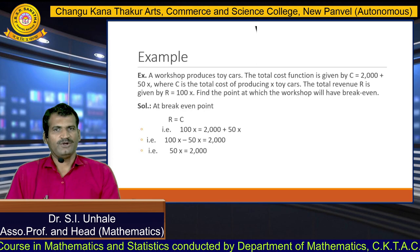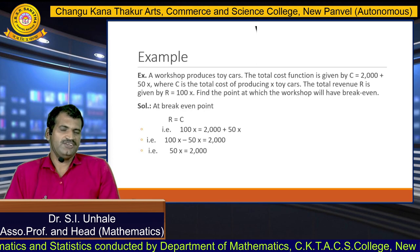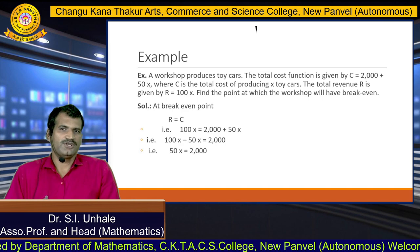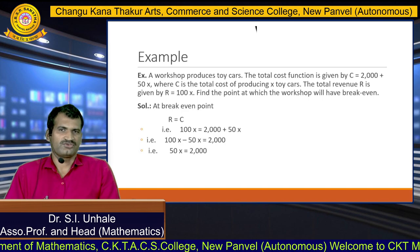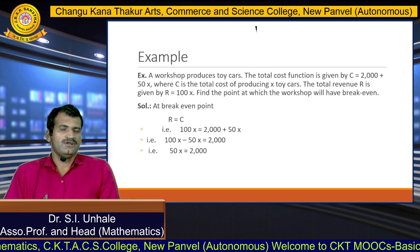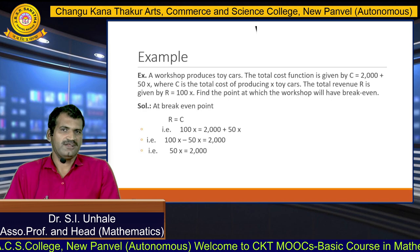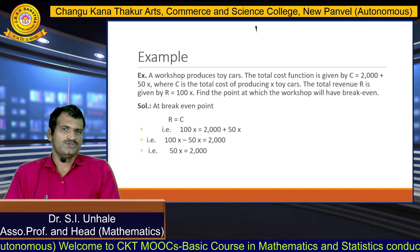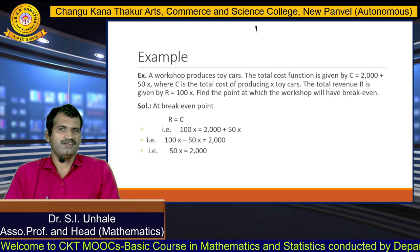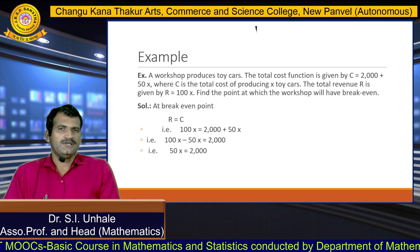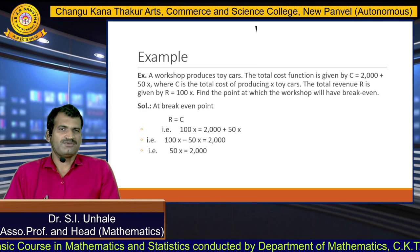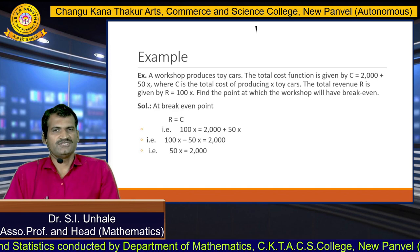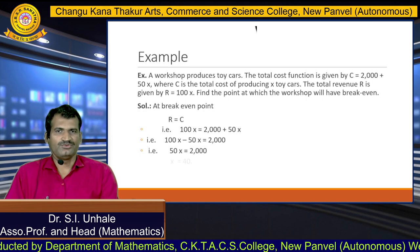We defined the breakeven point as the point where profit is 0, that is where total revenue equals total cost, i.e., R equals C. From the example, total revenue R is 100x and total cost C is 2000 plus 50x. Putting these values, we get 100x equals 2000 plus 50x. Keeping 2000 on the RHS and transferring 50x to the LHS, we get 100x minus 50x equals 2000, that is 50x equals 2000. Simplifying, we get x equals 40.